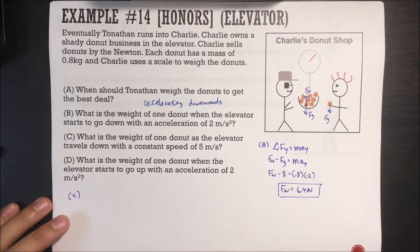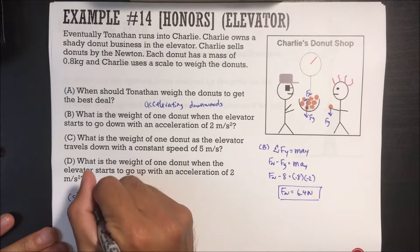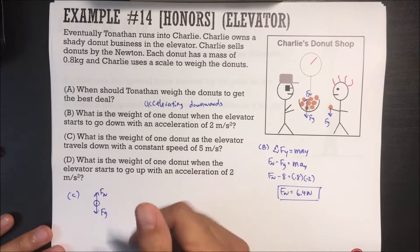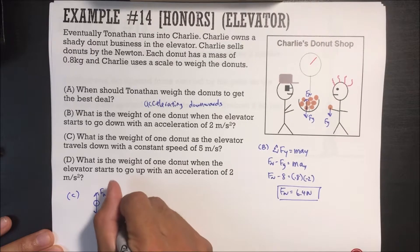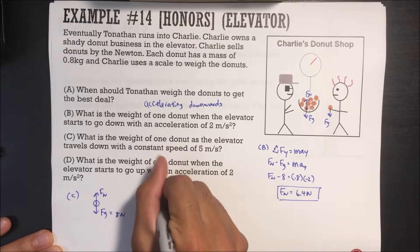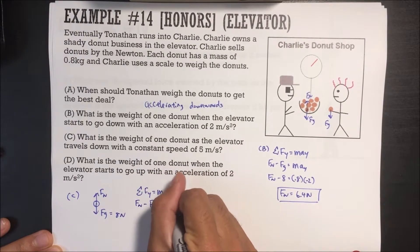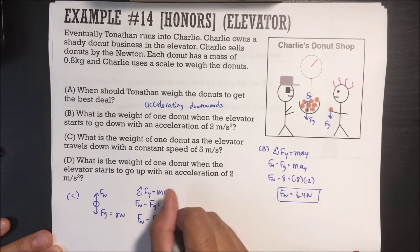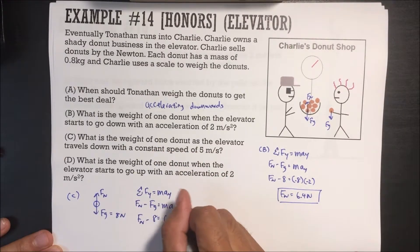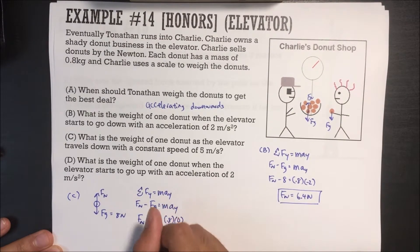Part C: what is the weight of one donut as the elevator travels down with a constant speed of 0.5 meters per second? Since it's not accelerating up or down, the force of gravity and normal force are exactly the same. Sum of all forces in Y equals mass times acceleration in Y: force normal minus force of gravity equals mass times acceleration. Force of gravity is 8 N, mass is 0.8, and acceleration is 0. So the normal force equals the force of gravity: 8 newtons.